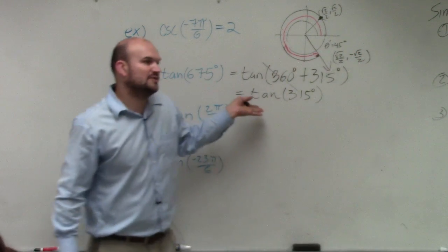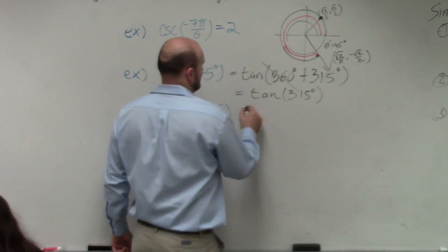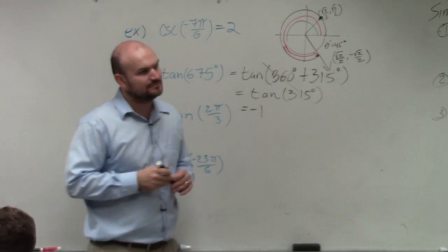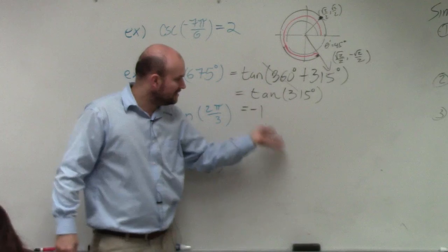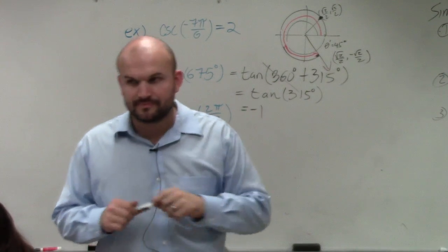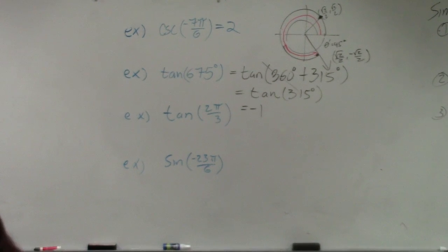So they're asking you for the tangent, which is y over x. So it should be a negative 1. Right. So it's negative square root of 2 over 2 divided by square root of 2 over 2, which is negative 1. You can, but you're going to get the exact same answer.